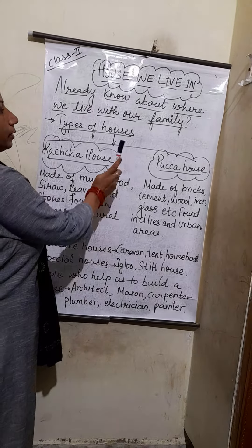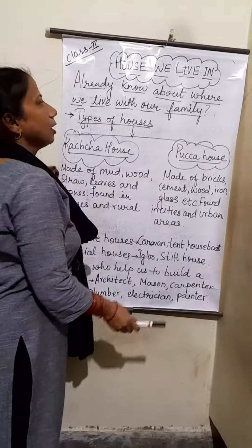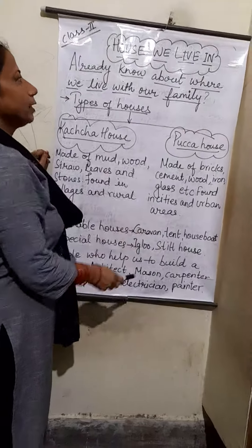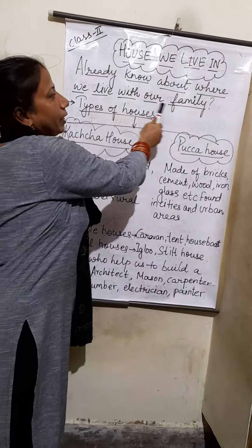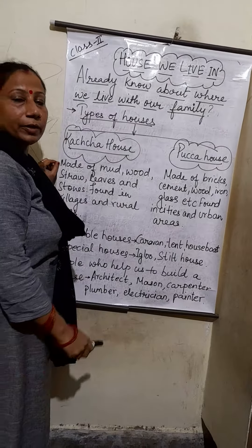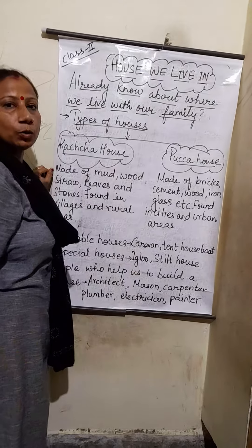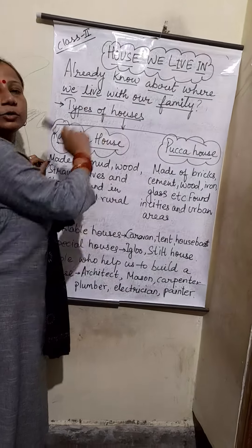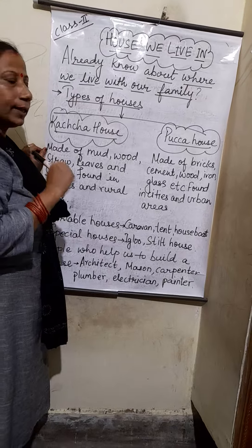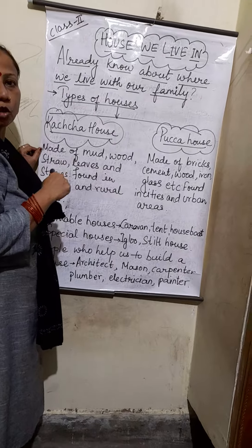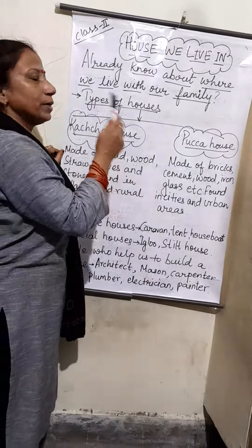Now today in this video I will be telling you about the different types of houses. But before that, you already know about where we live with our family — we live with our family in a house. Why? Because that house protects us from various things like dust, storm, thieves, wild animals, and so many other things.